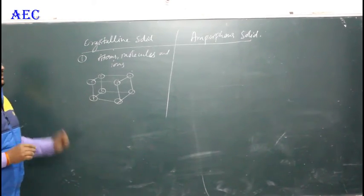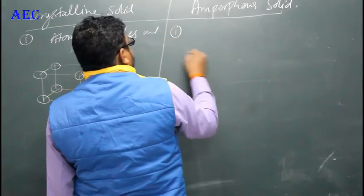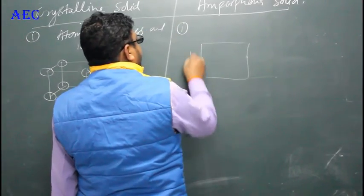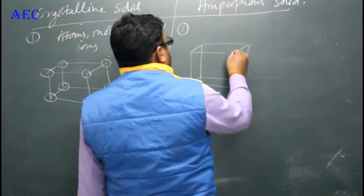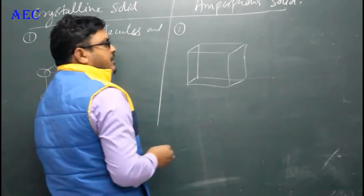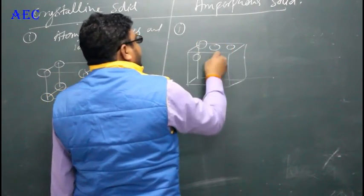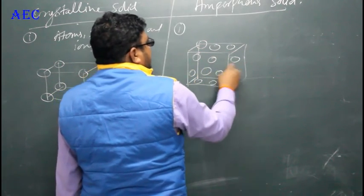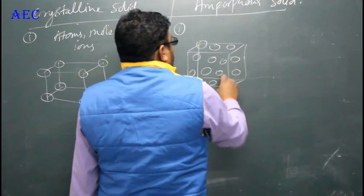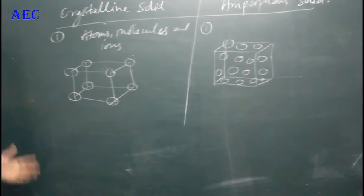If particles are fixed at specific positions, we call it a crystalline solid. If there is an irregular arrangement of atoms, molecules, and ions, we call it an amorphous solid. In amorphous solids, there is no regular pattern of constituent particles.